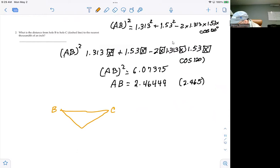From B to C. This is 120 degrees, 1.313. Both of these are inches. And again, the law of cosines applies here.